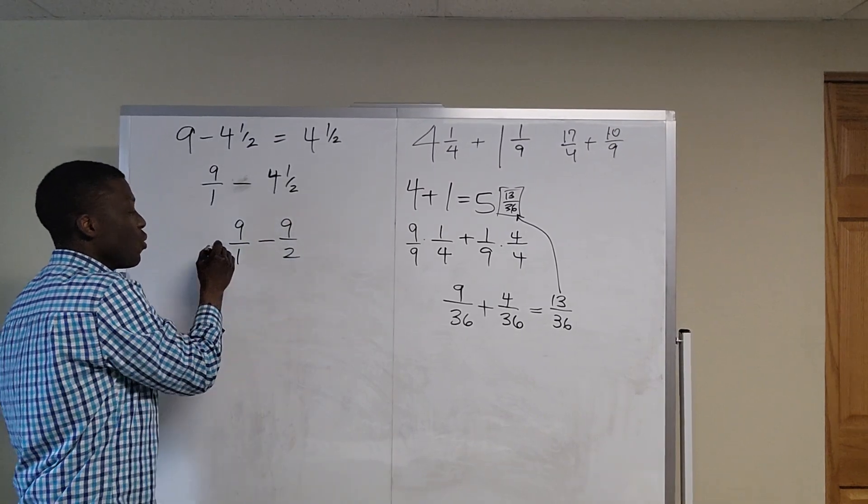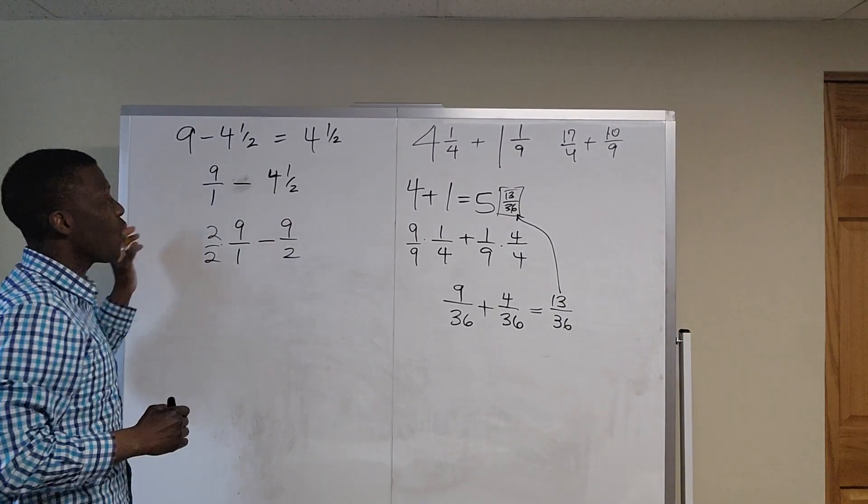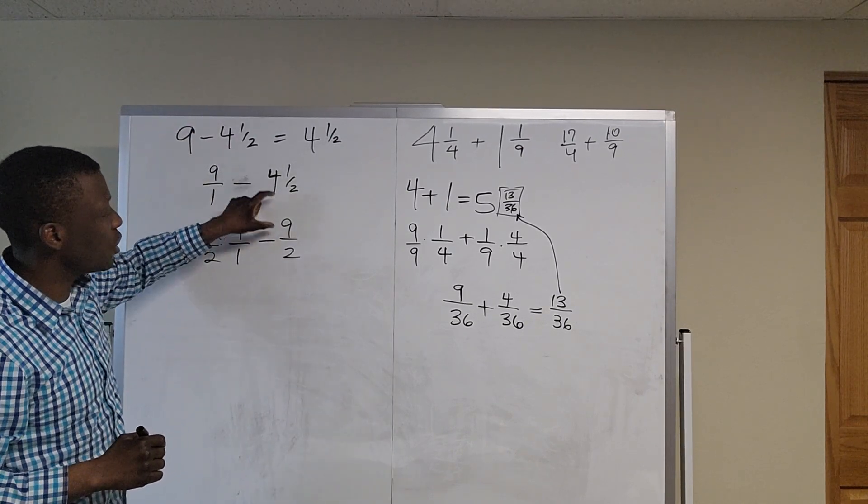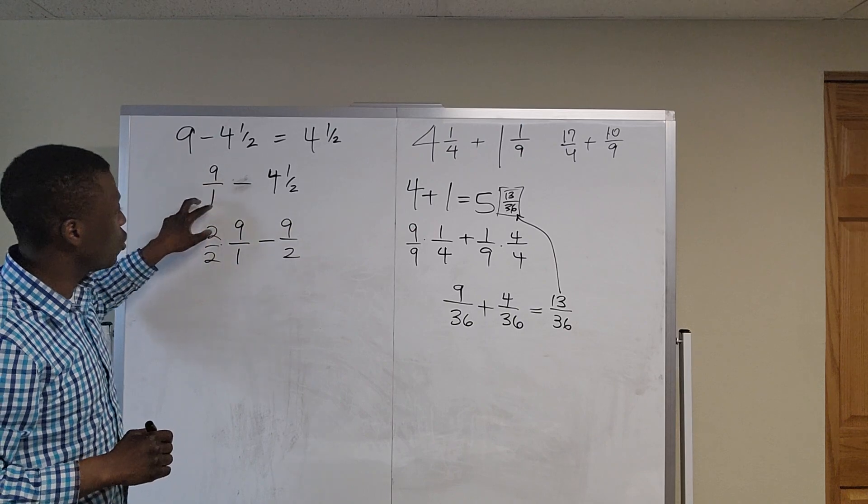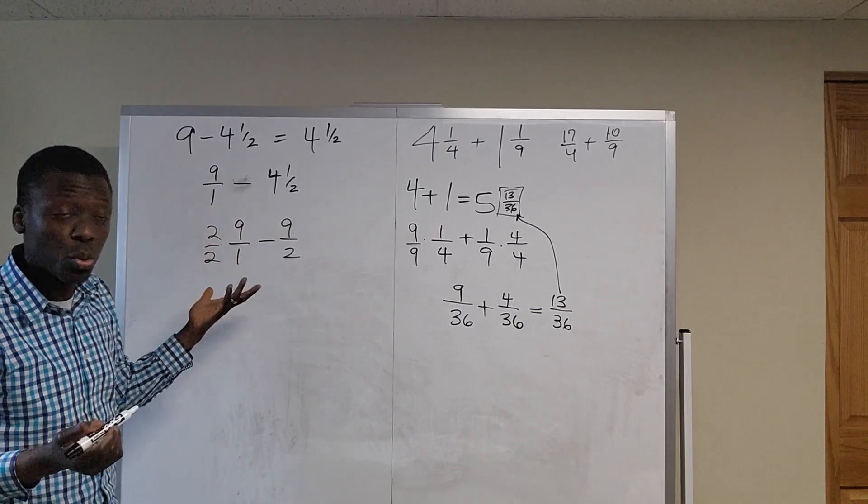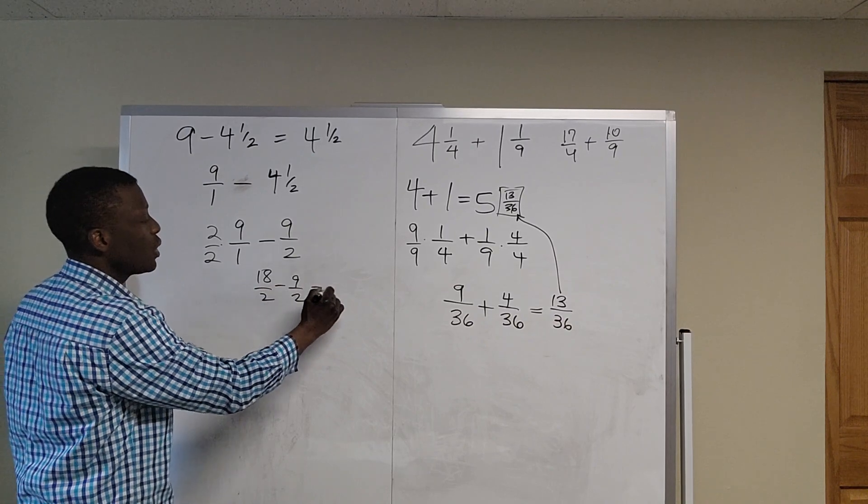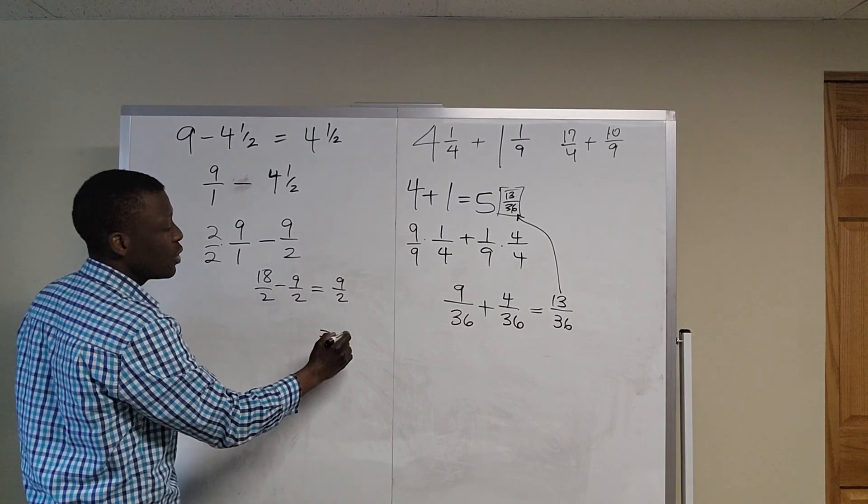So you find a common denominator. Another approach is you write this down as 9 over 1, change this to an improper fraction, find a common denominator which is 2, so this becomes 18 over 2 minus 9 over 2, which is 9 over 2, which is 4 and a half.